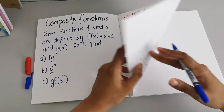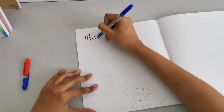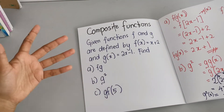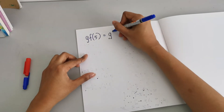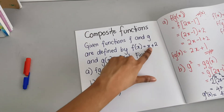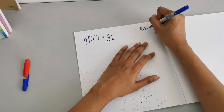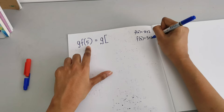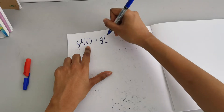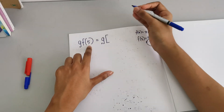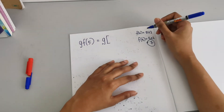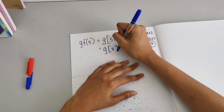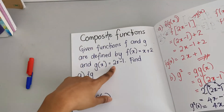For the last part, find g(f(5)). We haven't found g(f) previously, so we solve f first. f(x) = x + 2, so f(5) = 5 + 2 = 7. To show the full step-by-step solution, we substitute inside: g(5 + 2) = g(7). Now g(x) = 2x − 1, so g(7) = 2(7) − 1.